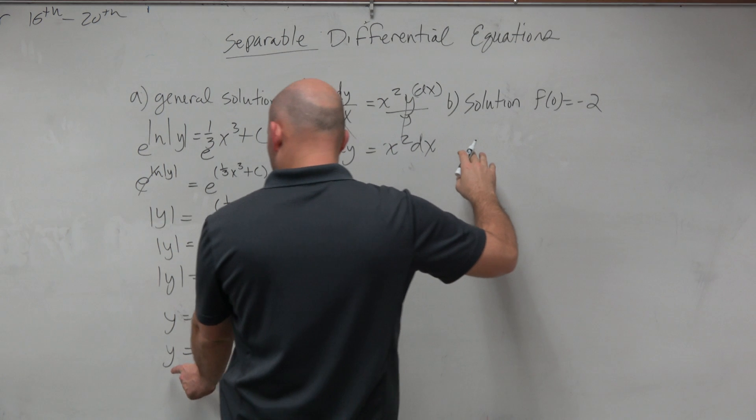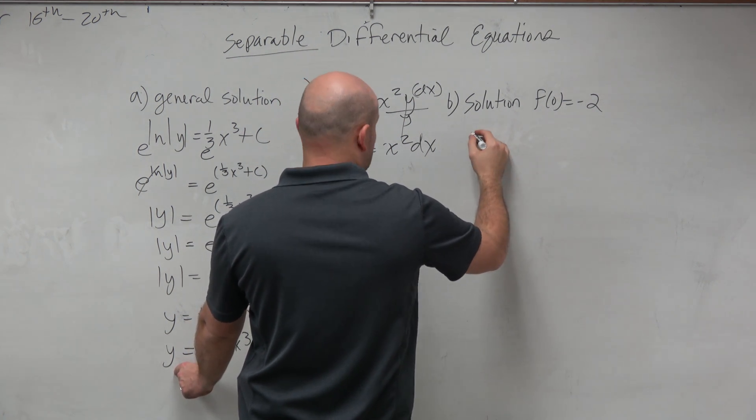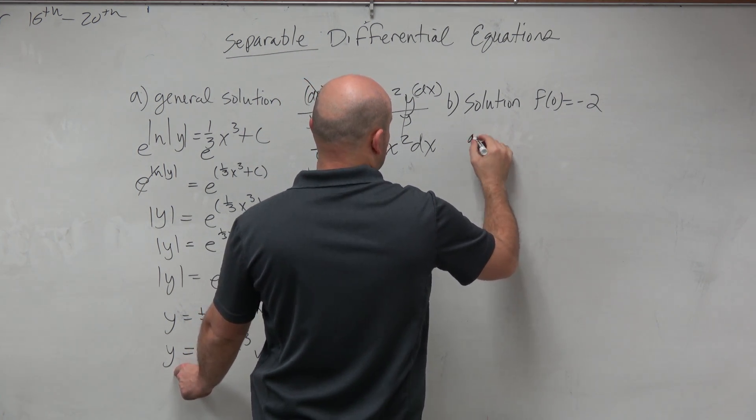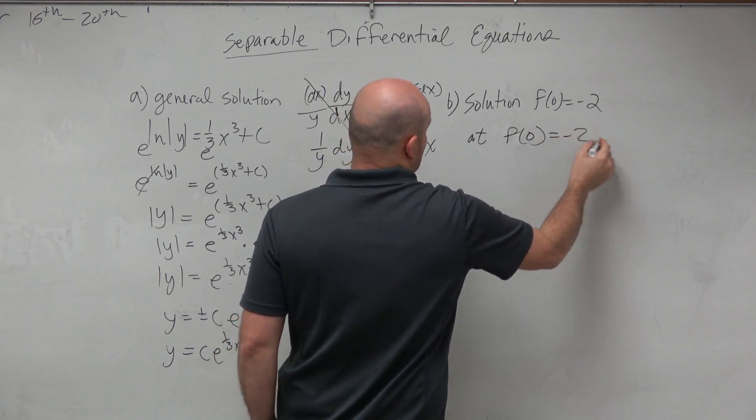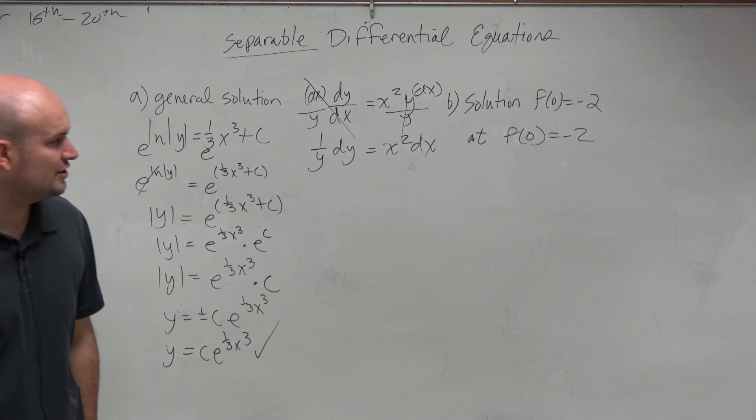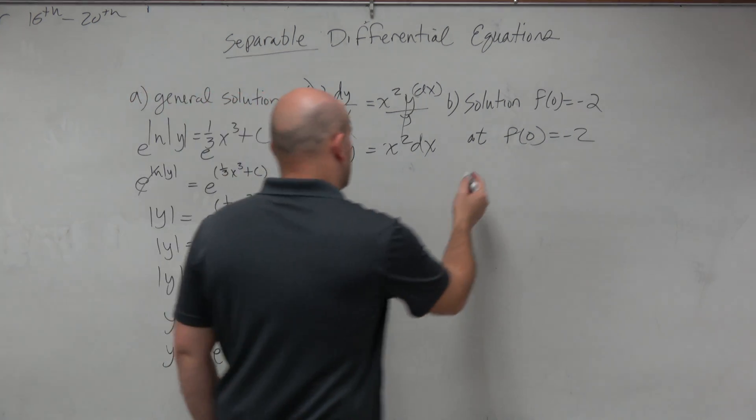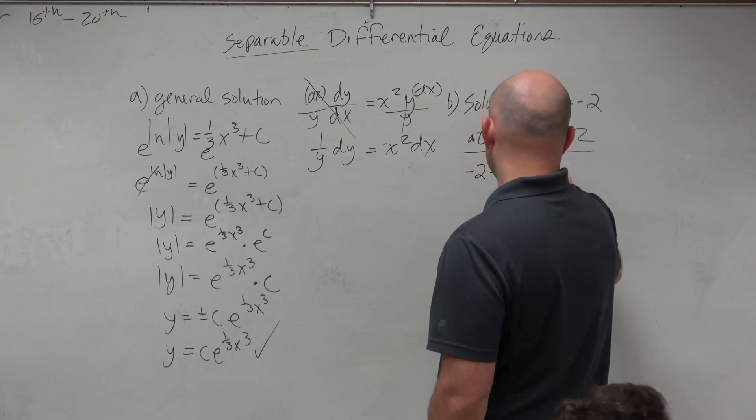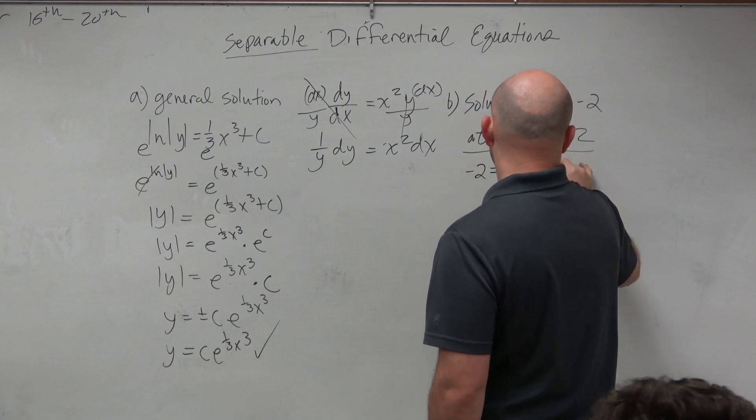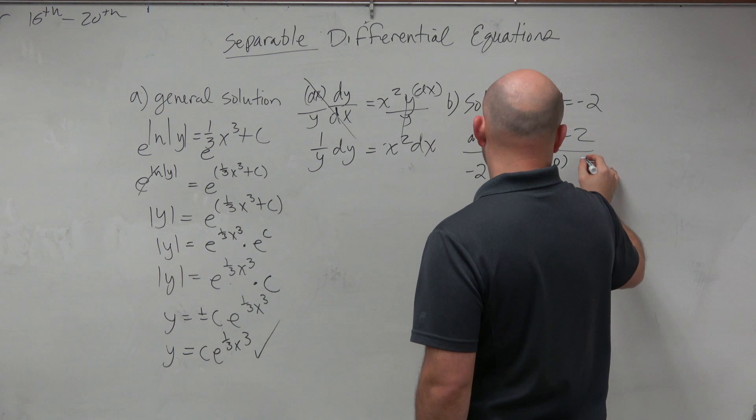So let's go ahead and plug in our values. So y in this case, so we could say at f of 0 equals negative 2. If I was writing this at a FRQ, I'd say at this point. And then I'd write negative 2 equals c times e to the 1/3 times 0 cubed.